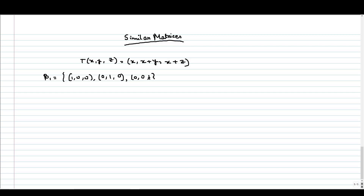Now we consider another ordered basis beta2, taking it as the vectors (1,0,1), (0,1,1), and (1,1,0). We will write the matrix representation with respect to both ordered bases.